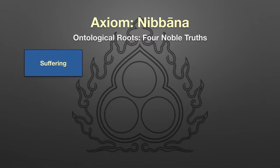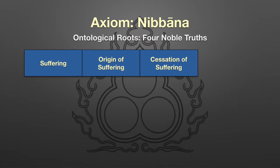Now I would like to go over the ontological roots of the teaching. We already have gone over Nibbana, which is the principal axiom of the teaching. Now let's go over the Four Noble Truths. What are they? The truth of suffering. The origin of suffering. The cessation of suffering. And the path to the cessation of suffering.